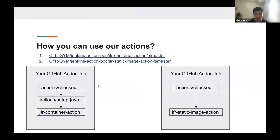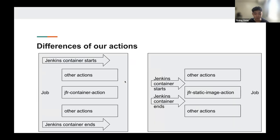You can access them in your GitHub action workflow definition by using the following URL. They are similar to other GitHub actions. The basic example is using actions checkout to set up the workspace and using our Jenkins file runner actions to run the Jenkins pipeline. There are some subtle differences in our actions. The root cause of these differences is the starting time of the Jenkins container. In JFR container action, the Jenkins container starts up before all GitHub actions execution and ends after all GitHub actions have results, so all GitHub actions will have influence on the container. This means you can use other actions in the marketplace to set up the environment as well.